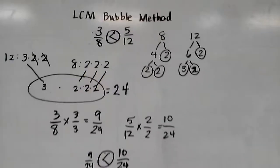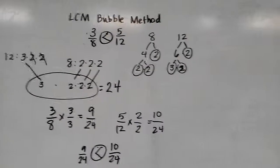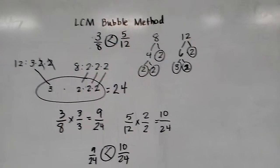And that is how you use the bubble method to find a lowest common multiple and compare two fractions that have different denominators.